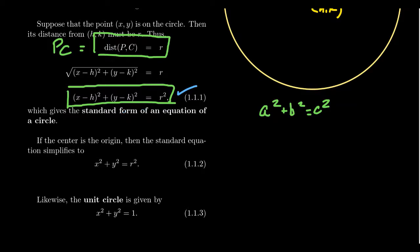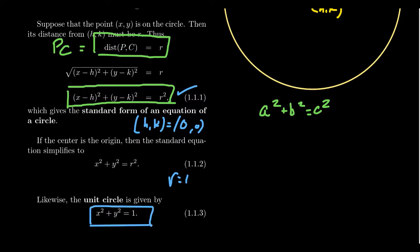If we place the center of the circle at the origin — that is, h comma k equals zero comma zero — then h and k disappear from the formula. If you take the radius to equal one, we call this the unit circle, and it has the equation x squared plus y squared equals one. The unit circle will be very important in our study of circles and trigonometry, but remember this general formula for circles.